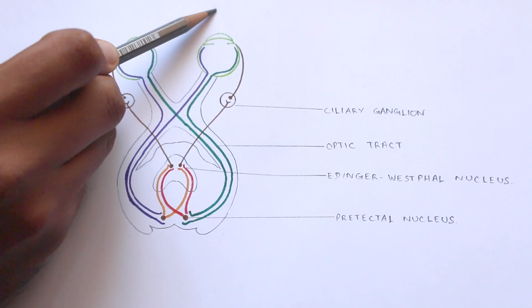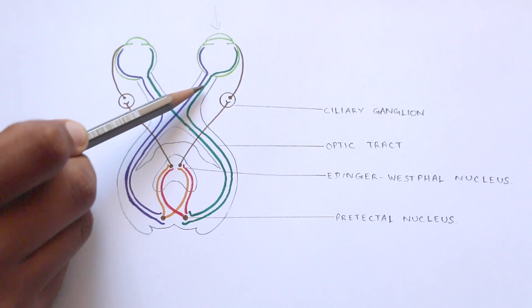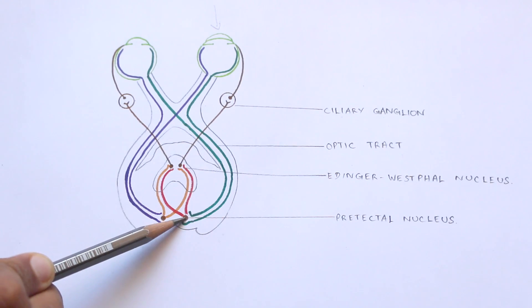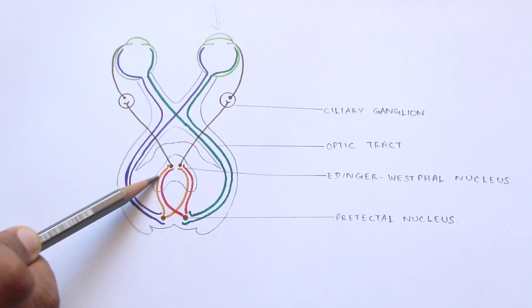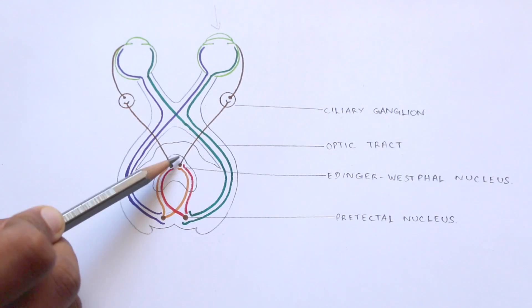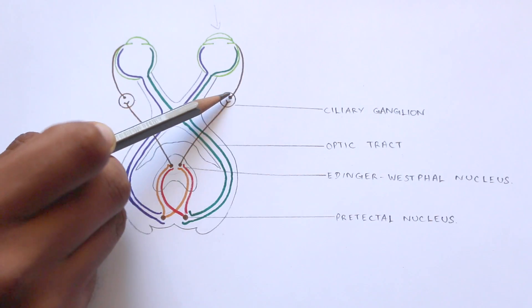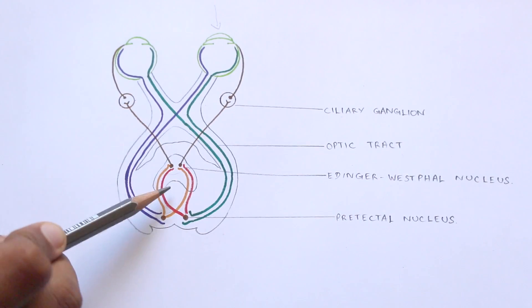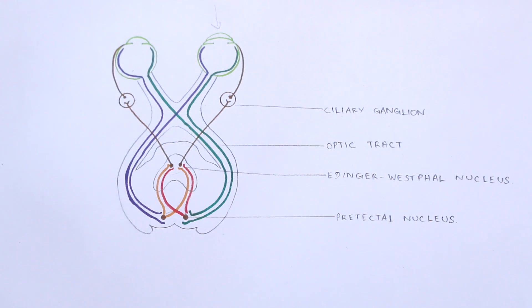The light reflex starts with light hitting the eye and impulses being conducted to the optic chiasma through the optic nerve. From here, fibers of the optic tract carry impulses to the pre-tectal nucleus in the midbrain. The Edinger-Westphal nucleus of both sides receives impulses from the pre-tectal nucleus. Pre-ganglionic fibers from the Edinger-Westphal nucleus relay in the ciliary ganglion, from where post-ganglionic fibers lead to the sphincter pupillae muscle and cause constriction of the pupil. Bilateral innervation at the Edinger-Westphal nucleus is responsible for the indirect or consensual light reflex.